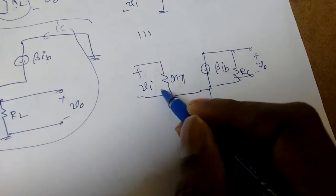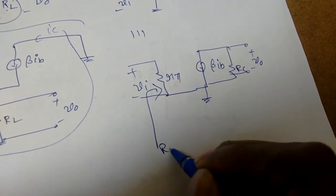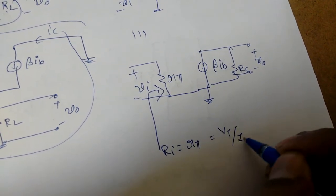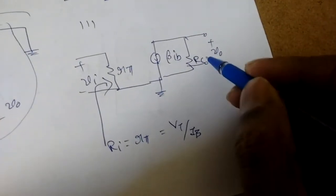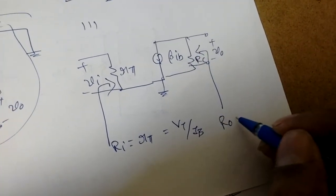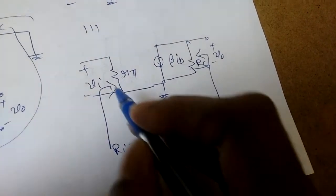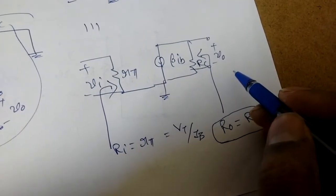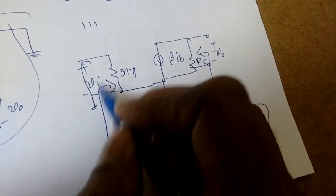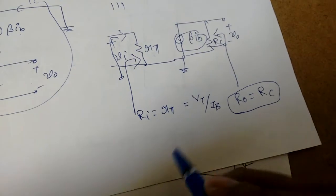For the common emitter amplifier, looking at the input side, the input impedance r_i is simply r_pi, which equals V_T / i_b. Looking at the output side, r_out equals r_c only. The reason is: when finding output resistance, we set input voltage to zero, which makes the base current zero, so the dependent current source vanishes and only r_c remains.